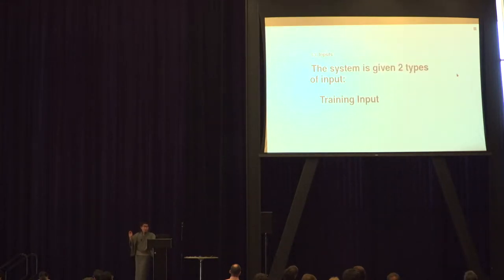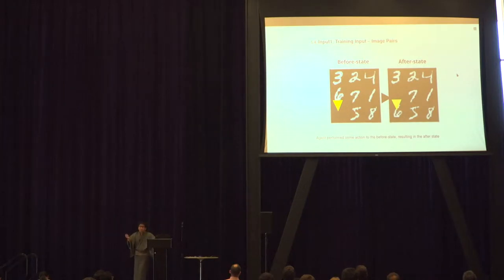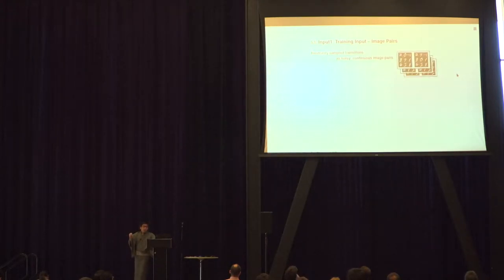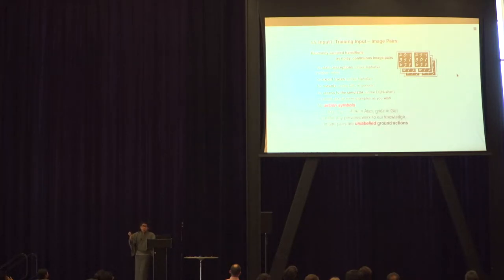The system is given two inputs: training inputs and planning input. The training input consists of image pairs — before and after some action is executed, such as tile-6 moved downward. These transitions are randomly sampled from the environment and are continuous and noisy. There is no state description, no expert traces, no rewards, no access to the simulator, and no action symbols assigned to each pair. You don't know what action was performed — you need to infer this only from the image input.